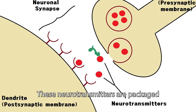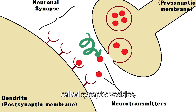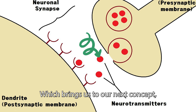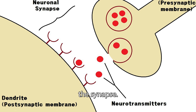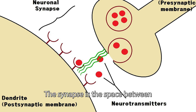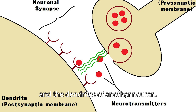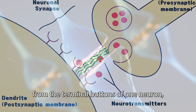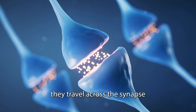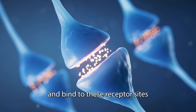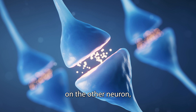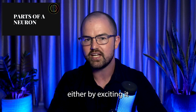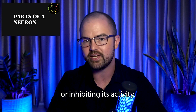These neurotransmitters are packaged in small sacs called synaptic vesicles and are released into the synapse. The synapse is the space between the terminal buttons of one neuron and the dendrites of another neuron. When neurotransmitters are released, they travel across the synapse and bind to receptor sites on the other neuron. This binding process causes changes in the receiving neuron, either by exciting it or inhibiting its activity.